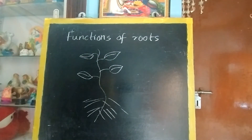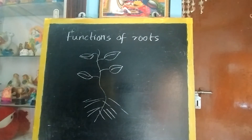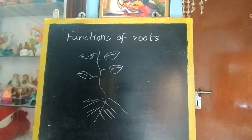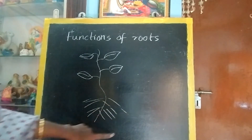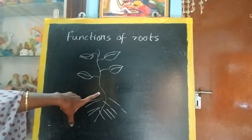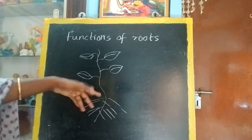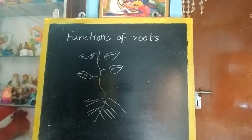Just go and pluck one plant, a very small plant. Is it easy to pluck a small plant? Yes. But can you pluck a tree or a big plant? It's very tough. So who is holding very tightly like that? This root only is holding.